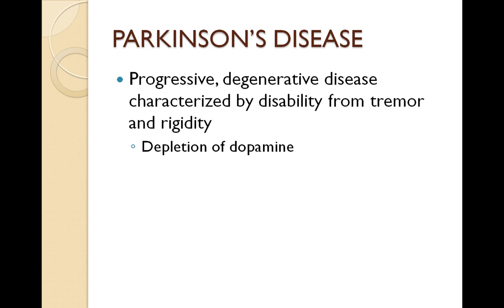Dopamine is produced in the substantia nigra of the brain, and it's transmitted to neural pathways via the basal ganglia. So dopamine is produced in the brain and transmitted to our neural pathways via the basal ganglia.